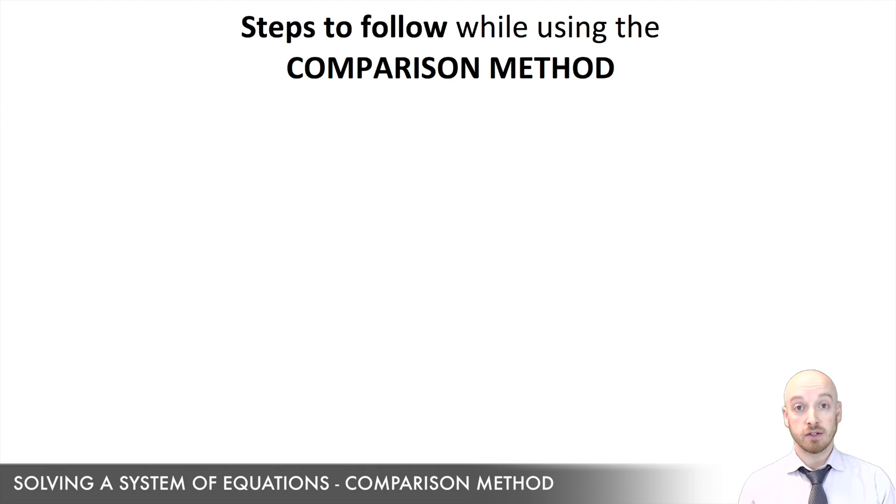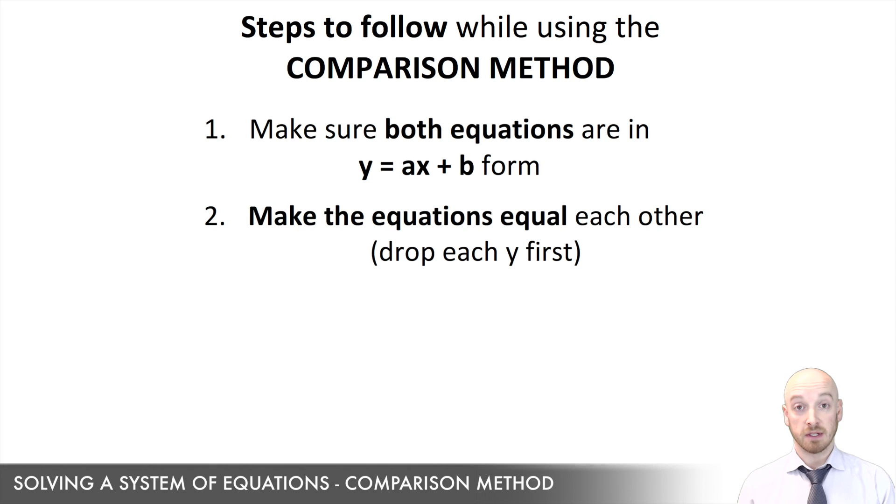Now here are the steps that I just used to solve a system of equations using the comparison method. You'll want to write these down and keep them handy for when you're practicing. First thing, you have to make sure the two equations look like y equals ax plus b. Don't panic if they don't. You can rearrange any equation to isolate that y variable. Second step, since the y values are equal, you can drop those y values, tuck them aside, and let the rest of the two equations equal each other.